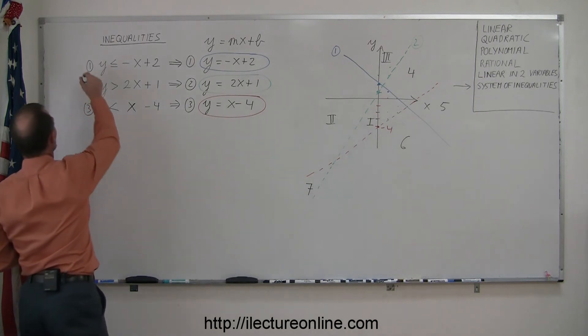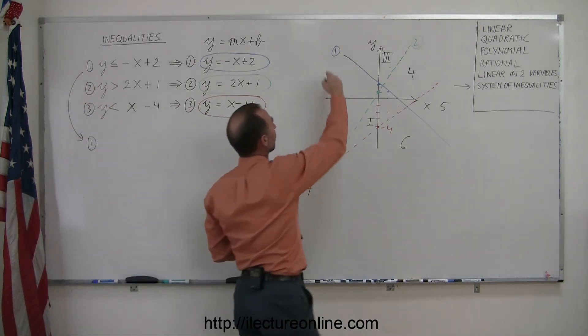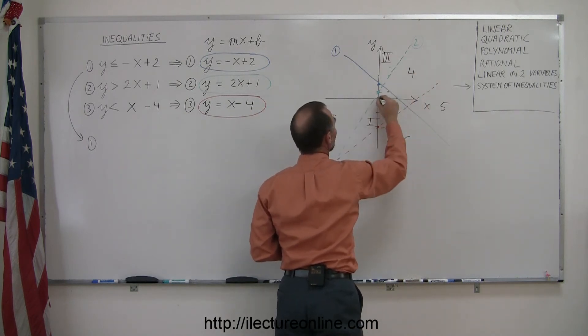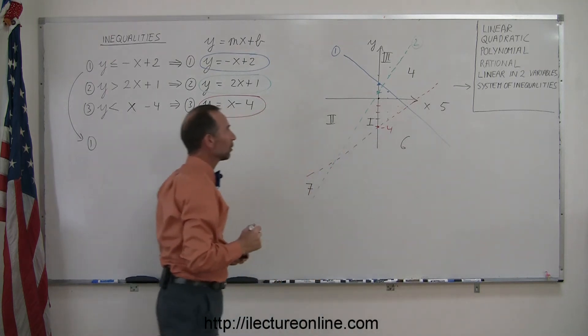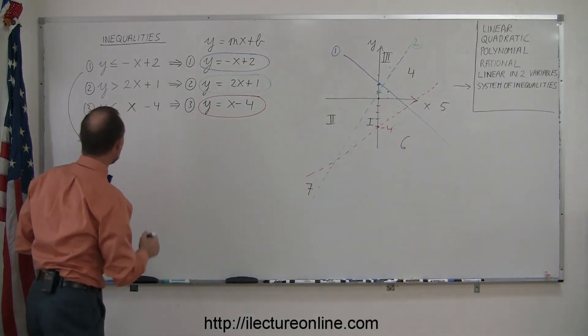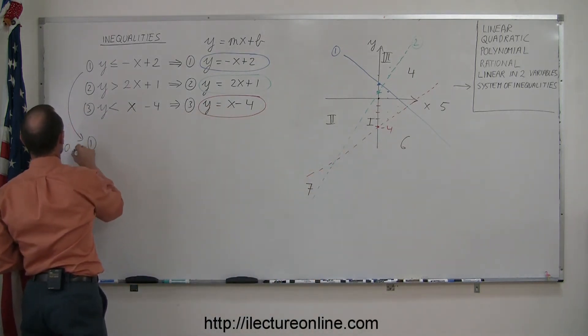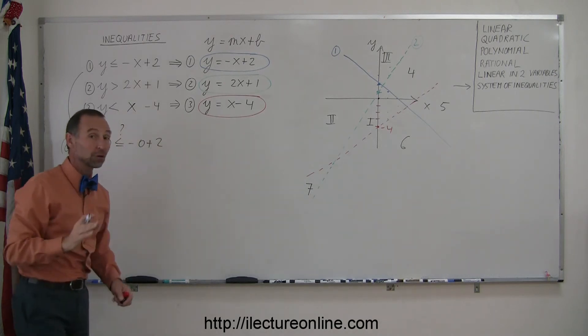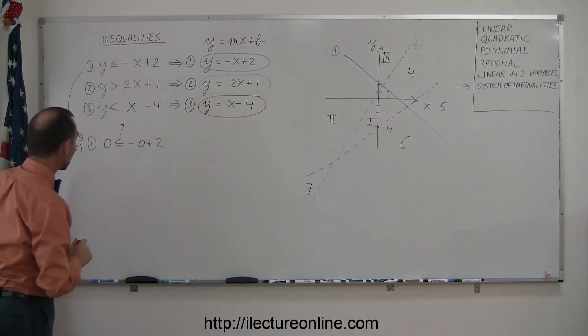So let's try line number 1 first. Line number 1 here separates this part of the x-y plane from this part of the x-y plane, so we'll pick this point right here, the point (0, 0), which lies below the line. (0, 0), and plug that into the inequality, we get 0 is less than or equal to minus 0 plus 2, question mark. Of course, we don't know if that's correct, but we need to figure it out.